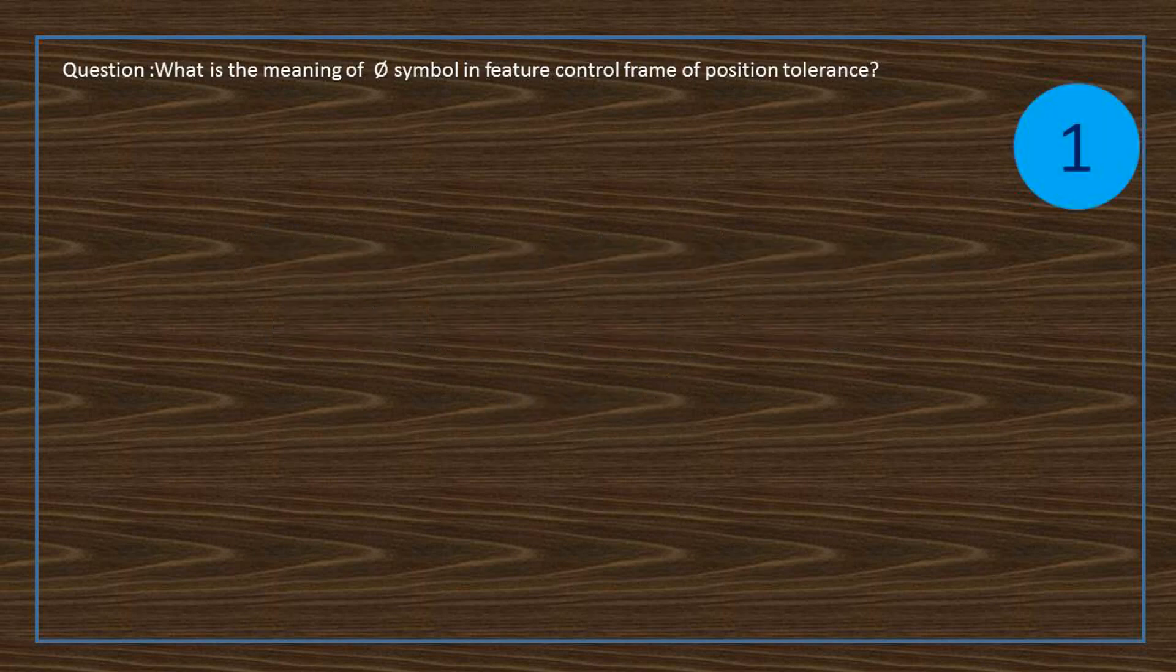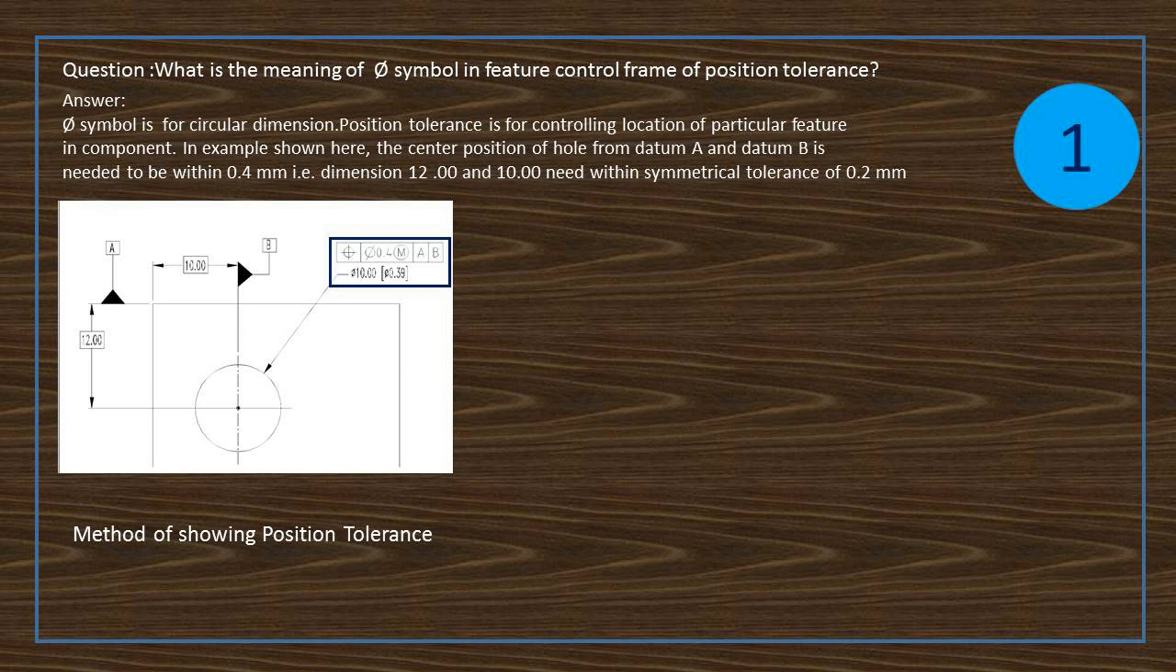Question: what is the meaning of phi symbol in feature control frame of position tolerance? Answer: the phi symbol is for circular dimension.